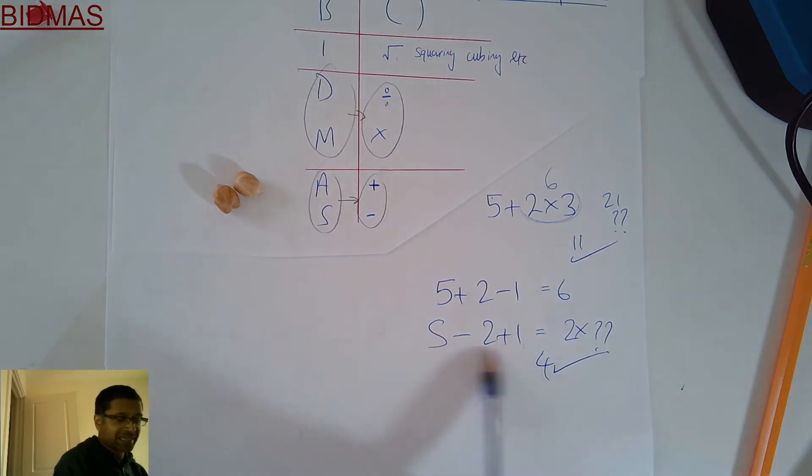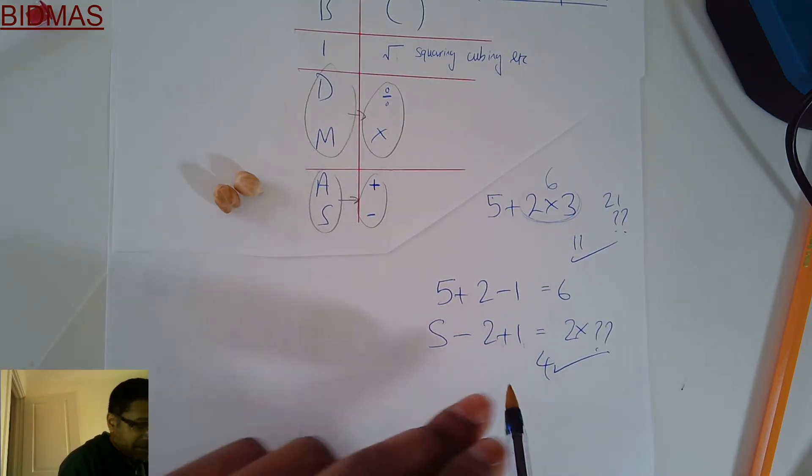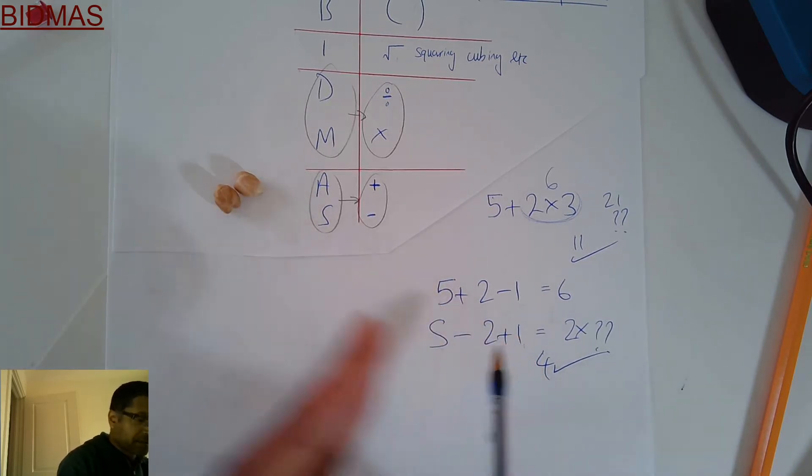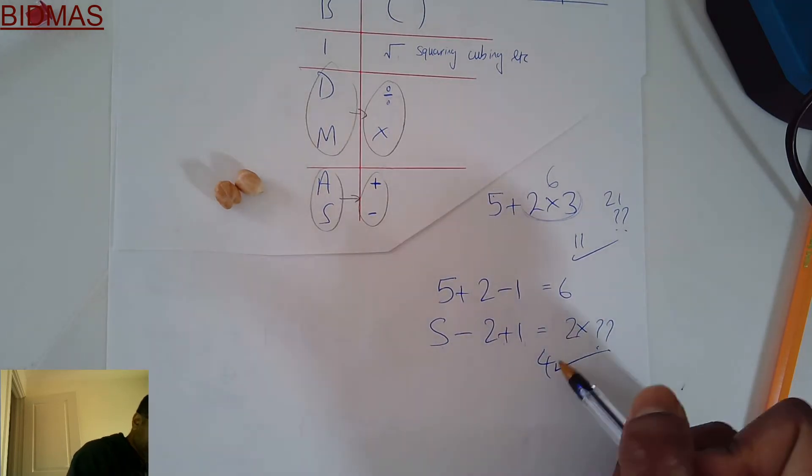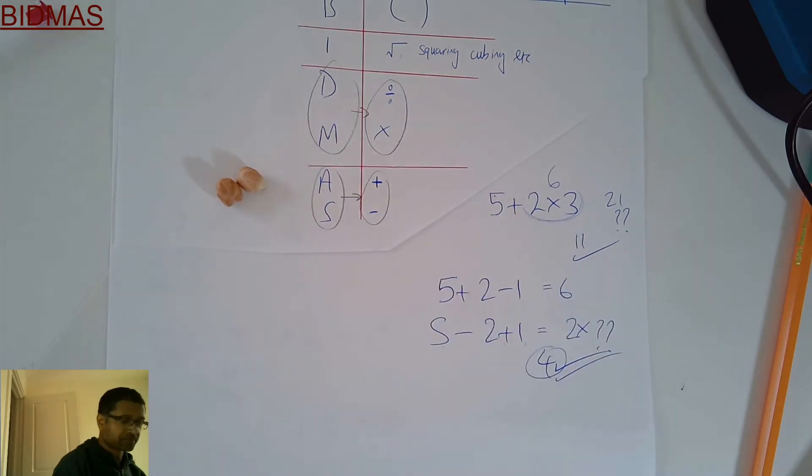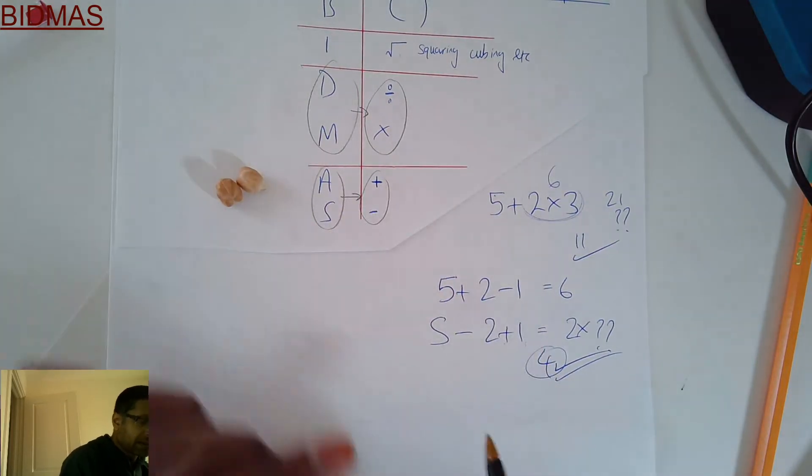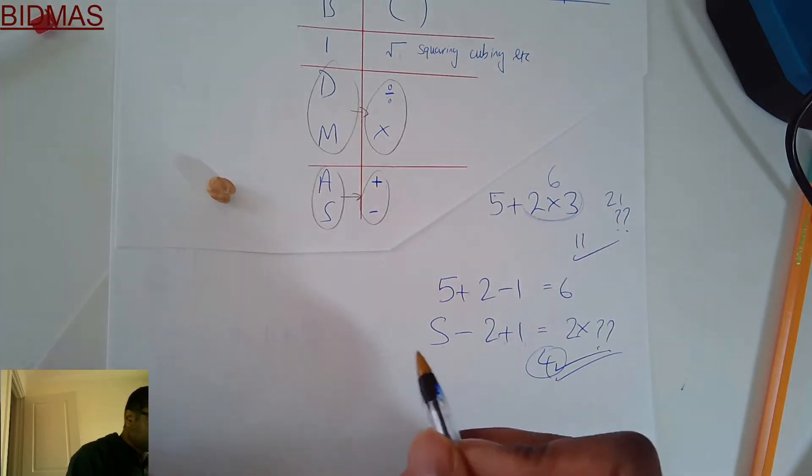So whenever you got adding and taking away together in the same calculation, don't think about plus first then minus. All you got to do is work from left to right. So 5-2=3, 3+1 gives it the 4, which is the correct answer. So whenever the same operators belong to the same league, work from left to right.